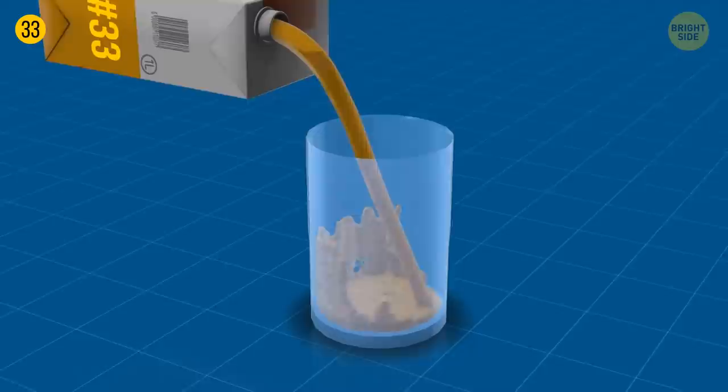To avoid spilling juice right onto your t-shirt, try pouring it from the other side of the carton. This way, it sloshes less and it's easy to control.